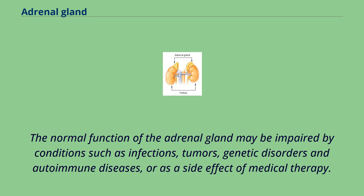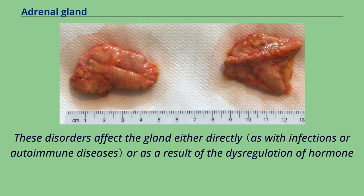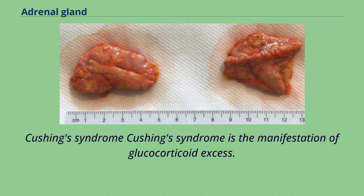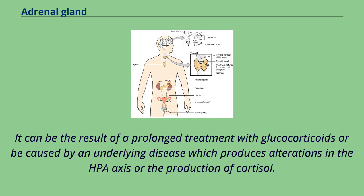The normal function of the adrenal gland may be impaired by conditions such as infections, tumors, genetic disorders, and autoimmune diseases, or as a side effect of medical therapy. These disorders affect the gland either directly or as a result of dysregulation of hormone production, leading to an excess or insufficiency of adrenal hormones and related symptoms. Cushing syndrome is the manifestation of glucocorticoid excess. It can be the result of prolonged treatment with glucocorticoids or be caused by an underlying disease that produces alterations in the HPA axis or the production of cortisol.